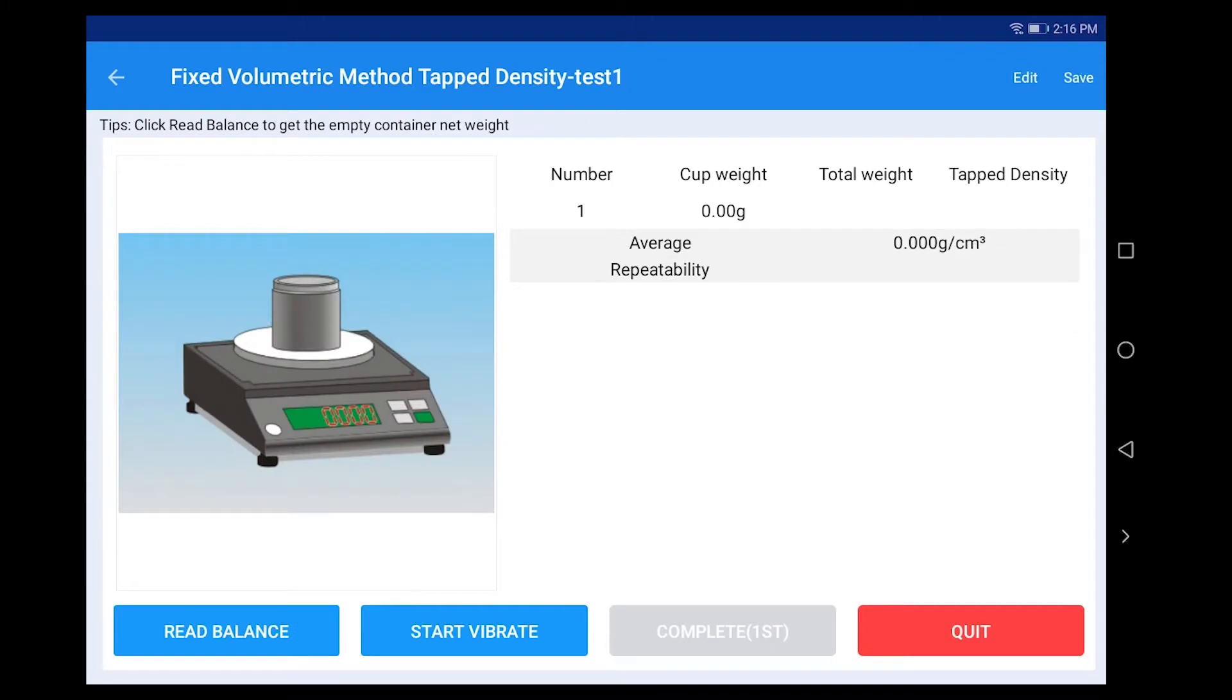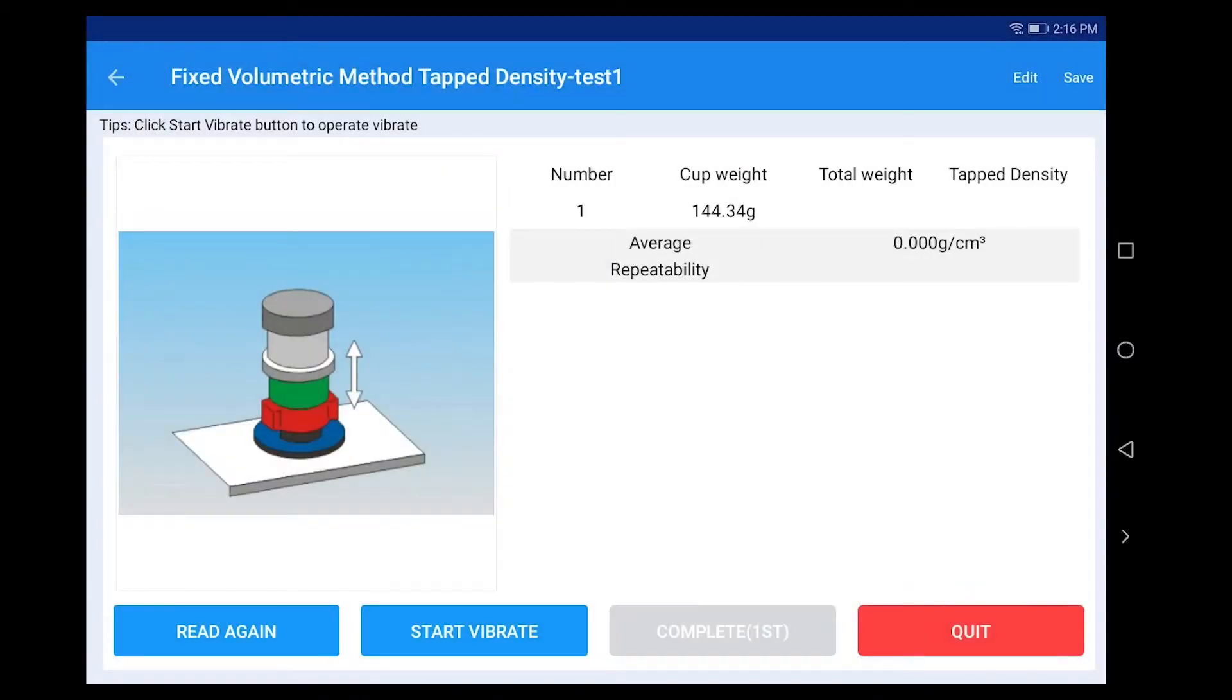Click Start Measure. Place the empty container on the balance. Click Read Balance to read the net weight of the empty container.